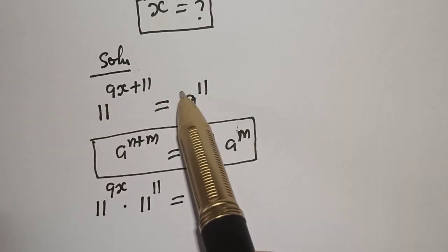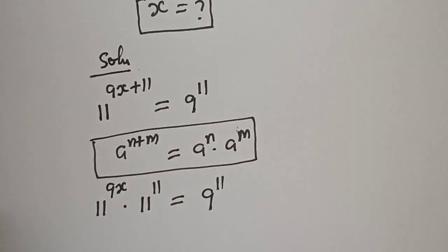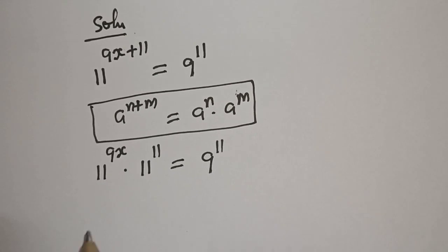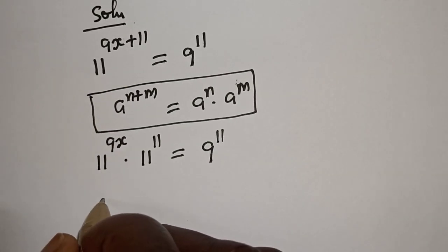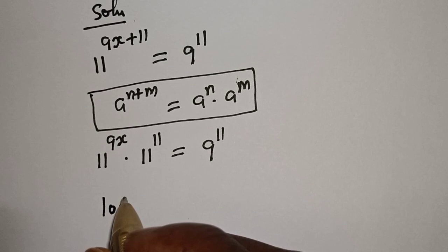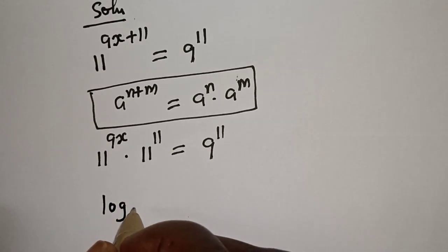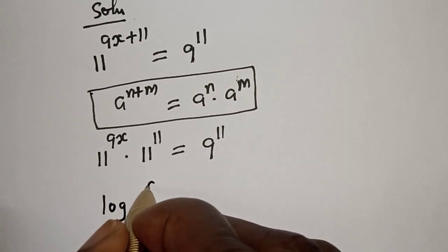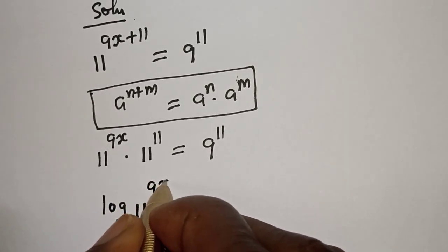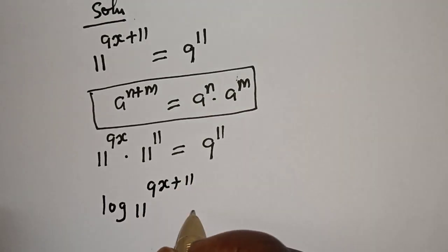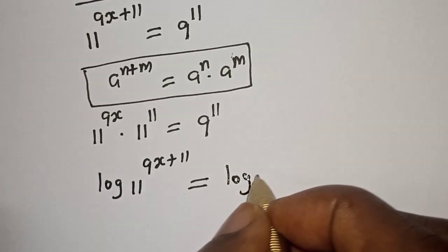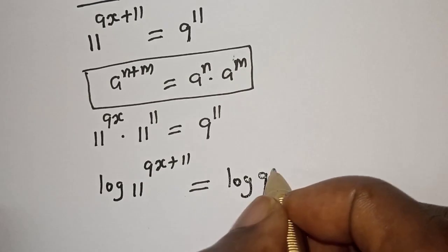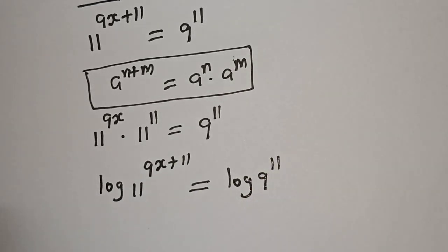Instead of continuing this way, we can take the log of both sides. Let's take the log of both sides: log of 11 raised to power 9s plus 11 is equal to log of 9 raised to power 11.